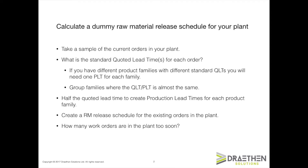Once you've identified all of your product family QLTs and PLTs, take a sample of accepted customer orders from the last week or two and create a dummy raw material release schedule. I suggest using a spreadsheet for this.